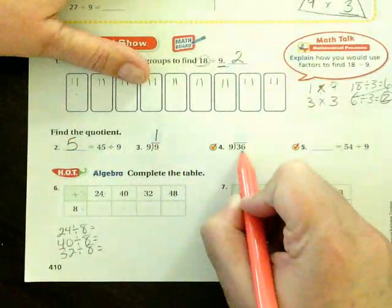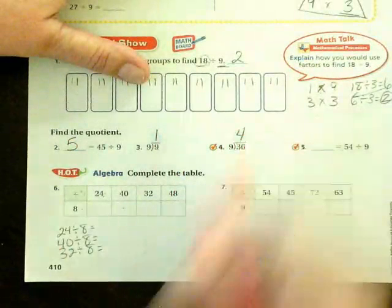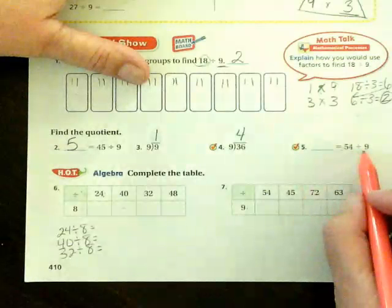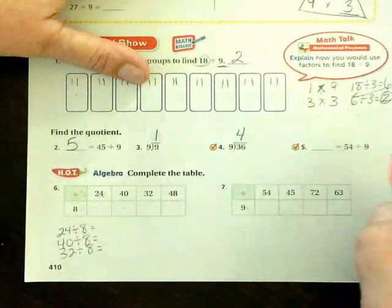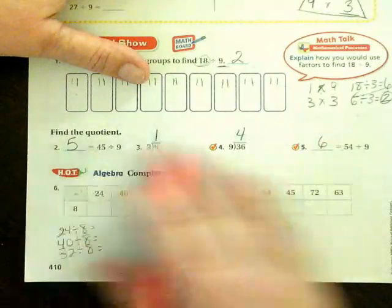How about 36 divided by 9? Well, I know that 9 times 4 is 36. And then I have 54 divided by 9. I know that 9 times 6 is 54. So those are your answers for that.